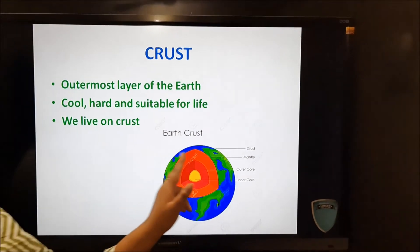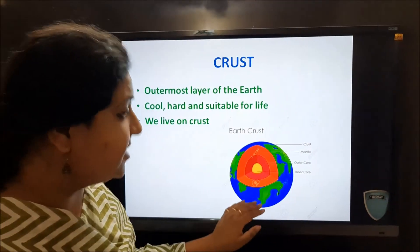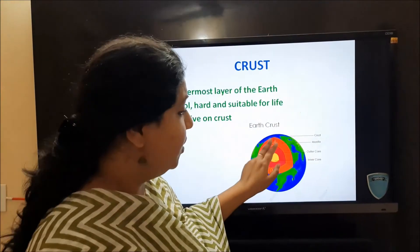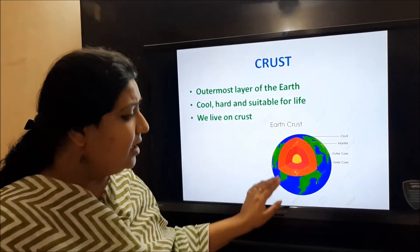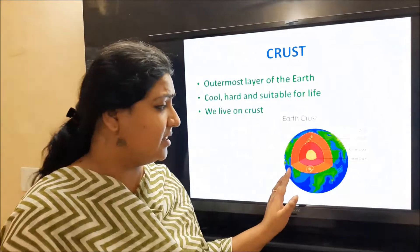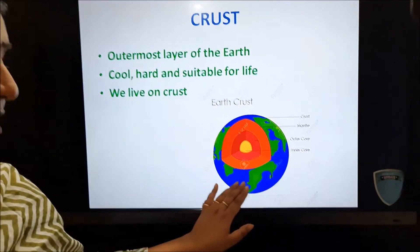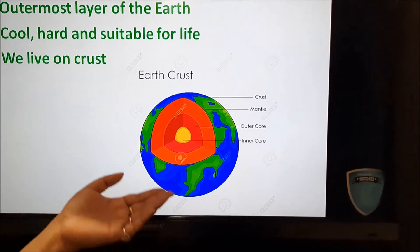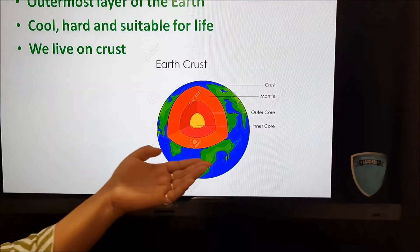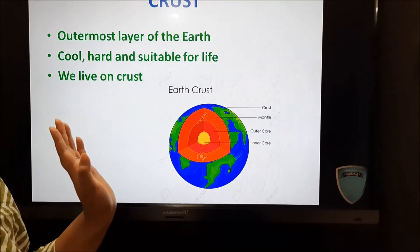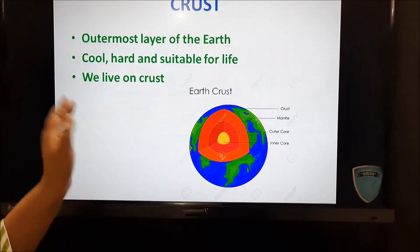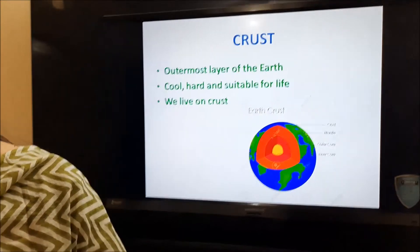Crust is the outermost layer and it is the thinnest layer. If you compare this layer with the other three layers, you will see that this is the thinnest layer, and whatever you see on this layer, such as the soil, the rock and the water bodies or whatever is there on the surface, is on the crust. So life is also possible only on this layer.